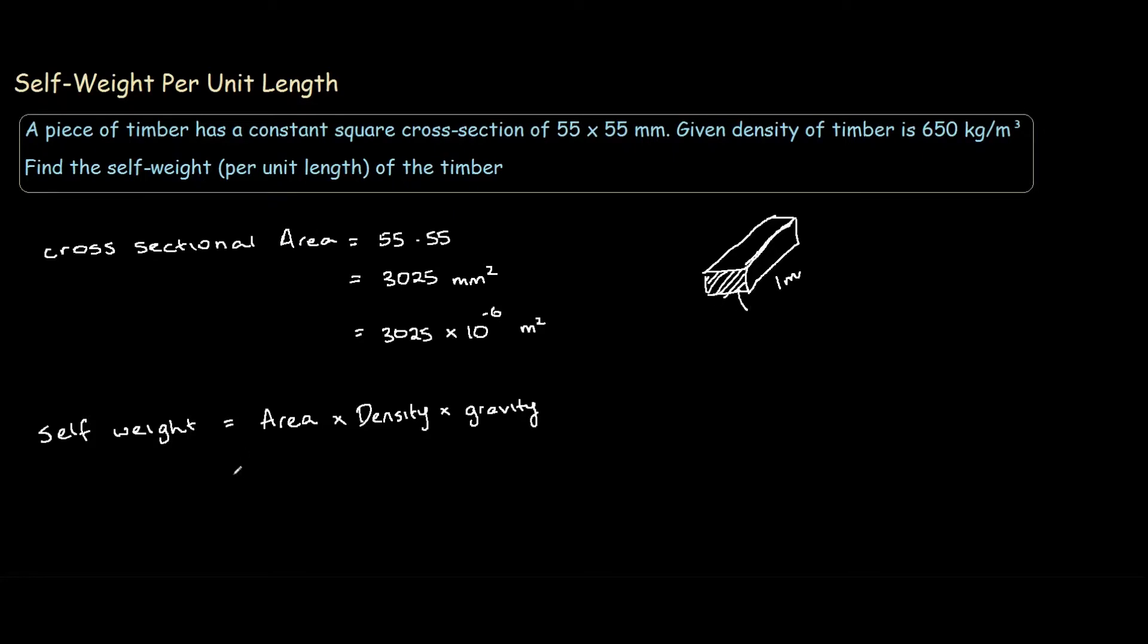So we have 3,025 times 10 to the negative 6 for the area. The density is 650 kilograms per meter cubed and gravity is 9.81. Multiplying these three together, we get 19.29 newtons per meter.